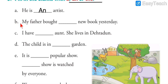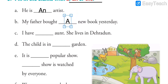The second blank is B: 'My father bought blank new book yesterday.' Can you find any vowel after the blank? No — 'new' starts with N, which is a consonant. Also, they are talking about just one book. So there is no option for 'AN,' and no specific detail is given to use 'THE.' We simply put 'A.' The answer is: 'My father bought A new book yesterday.'